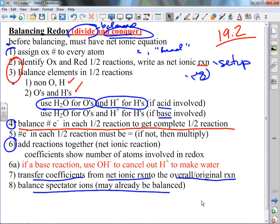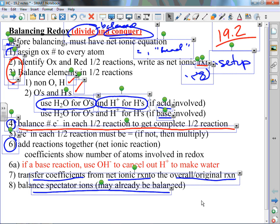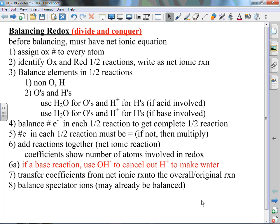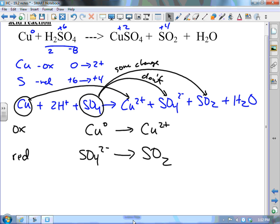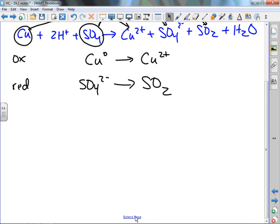If we get to this point, we're in good shape because we've just done the hardest part. We want to balance the non-oxygen and hydrogen atoms, then balance oxygen and hydrogen. We're going to use waters for oxygens and H-pluses for hydrogens. Copper, we have one copper on each side. There's no oxygens, no hydrogens. Stop. Sulfur and oxygen, I've got a sulfur on each side. I've got four O's on the left, I only got two on the right. So I need to add two waters. Now I've created four hydrogens on the right, so now I need four hydrogens on the left.